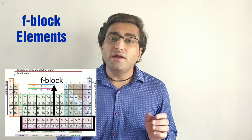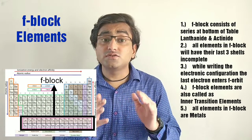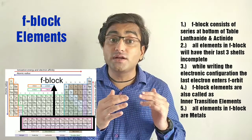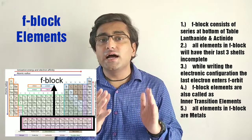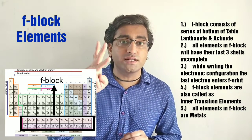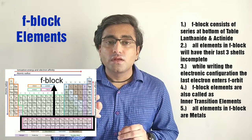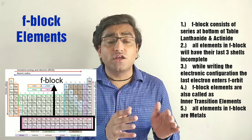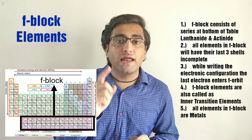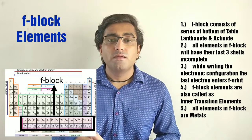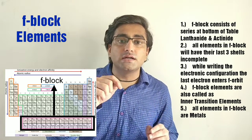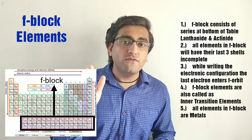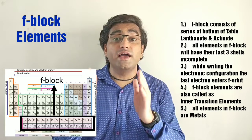Now let us learn about the last block, F block. Point 1, the F block consists of 2 additional series present at the bottom of the periodic table: lanthanides and actinides. Point 2, all elements in the F block have their last 3 shells incomplete. Point 3, the last electron enters the F orbit. Point 4, these elements are also called inner transition elements. Point 5, all elements in the F block are metals.